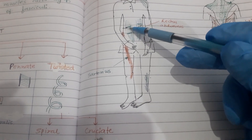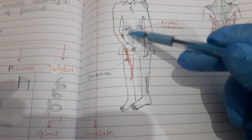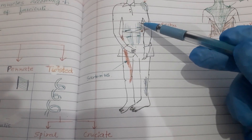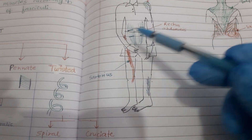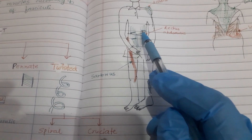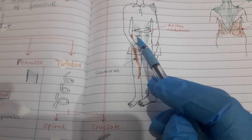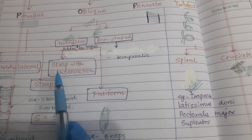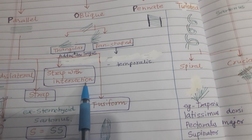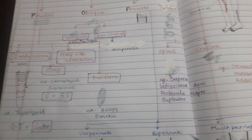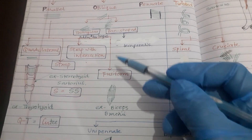For strap with intersection, the example is rectus abdominis in the abdomen. It has a parallel architecture and is very lengthy like a strap, along with tendinous intersections. So rectus abdominis is the example of strap with intersection.